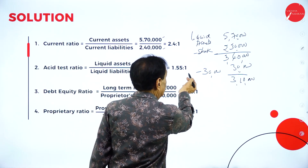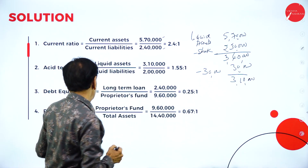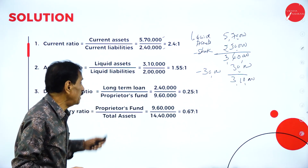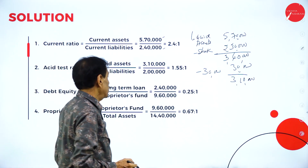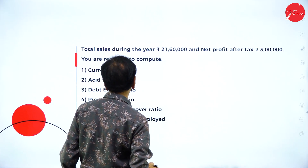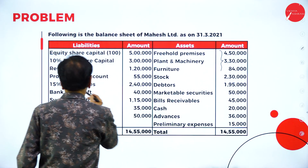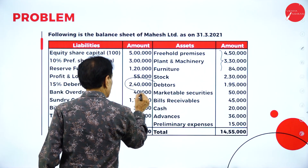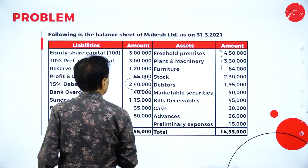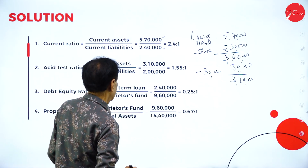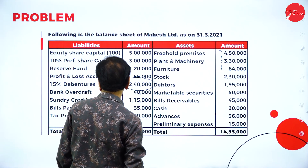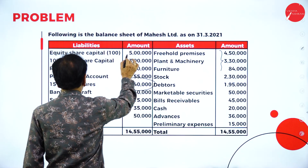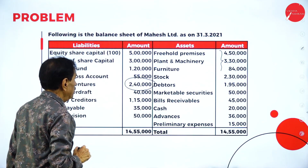Now for the debt equity ratio — long-term loan divided by proprietary fund. The long-term loan is debentures of 2 lakh 40,000. The proprietary fund consists of equity share capital, preference capital, reserve fund, and profit and loss account, totalling 9 lakh 60,000.